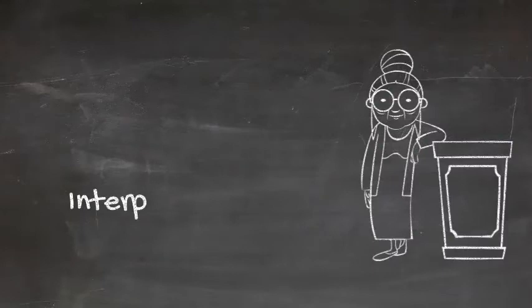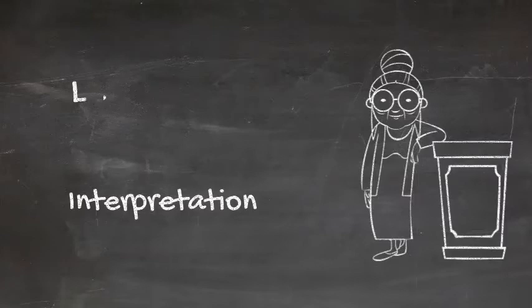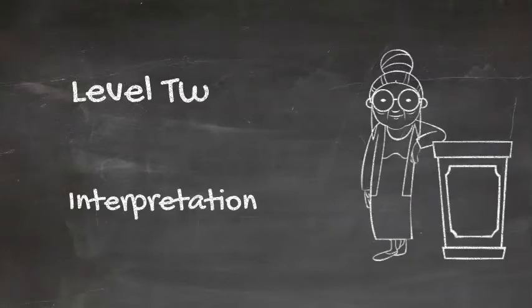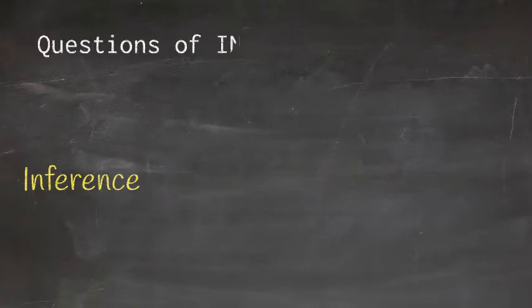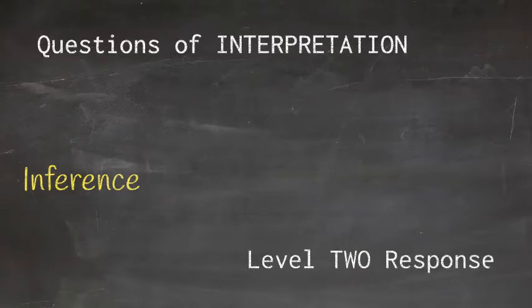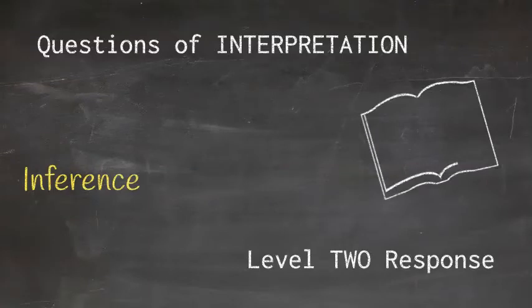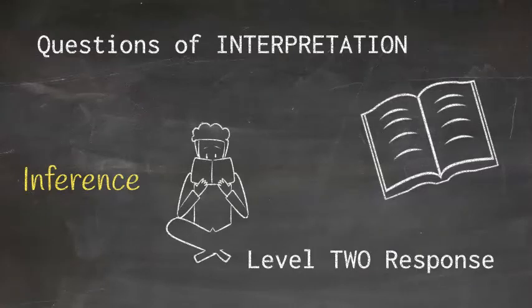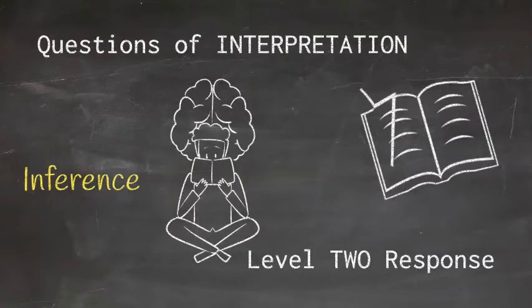Level 2: Interpretation. When we ask a question of interpretation we are asking for a level 2 response, inference. You come up with an inference by thinking about why or how the evidence is important. Inferences come from your brain struggling with the text. Questions of interpretation may have many valid answers. As long as you can find sufficient and appropriate evidence in the text, and nothing else in the text contradicts your inference, it's valid.